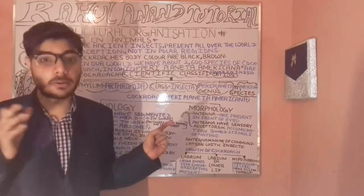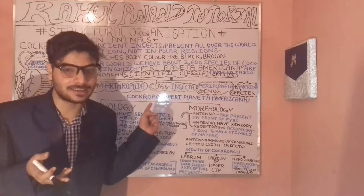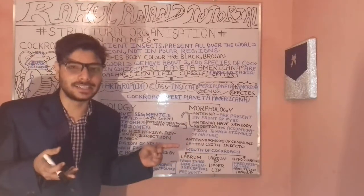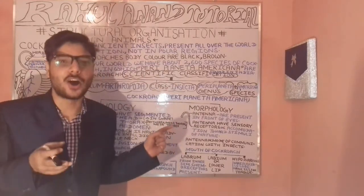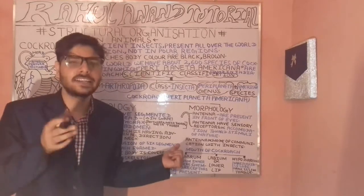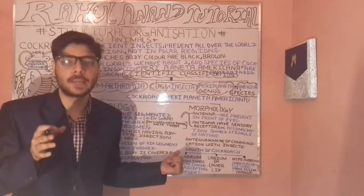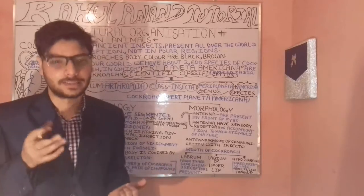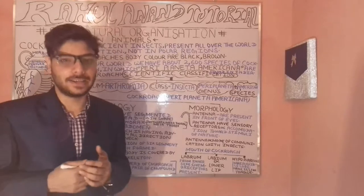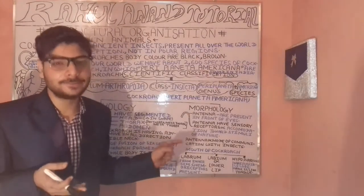When talking about the head morphologically, the cockroach head has a triangular shape. After the head, we have the thorax. Just as our spinal cord is divided into regions, the thorax of the cockroach is further divided into three broad categories: the prothorax, the mesothorax, and the metathorax.